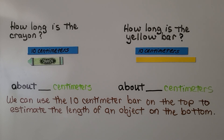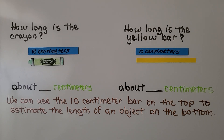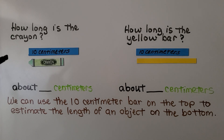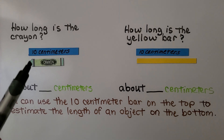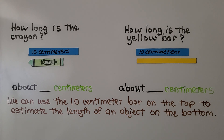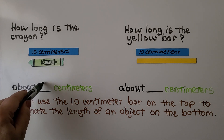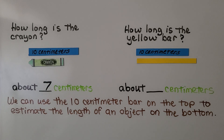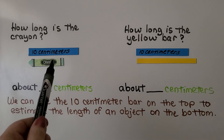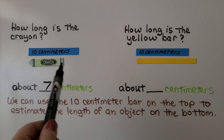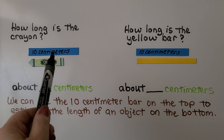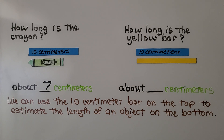Using our 10-centimeter strip, about how long is this crayon? Our blue strip is 10 centimeters. If you said about 7, you're right. It's probably about 7 centimeters, because halfway would be 5, and the crayon is closer to the 5 than it is to the 10. So 7 would be a good estimate.